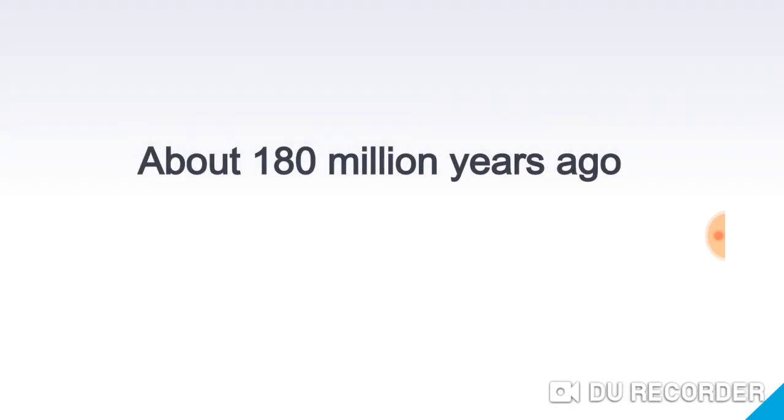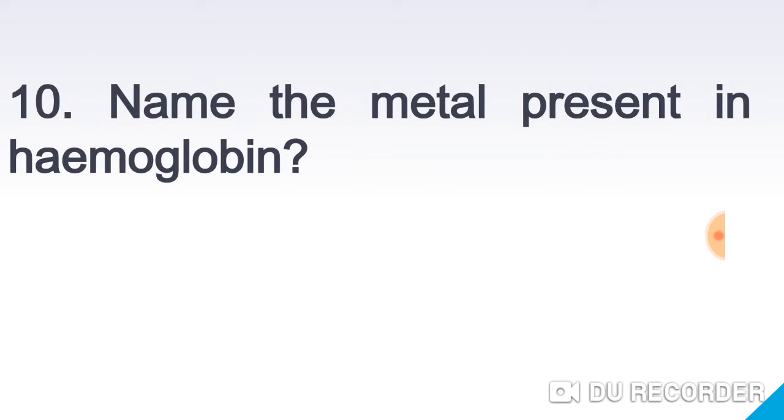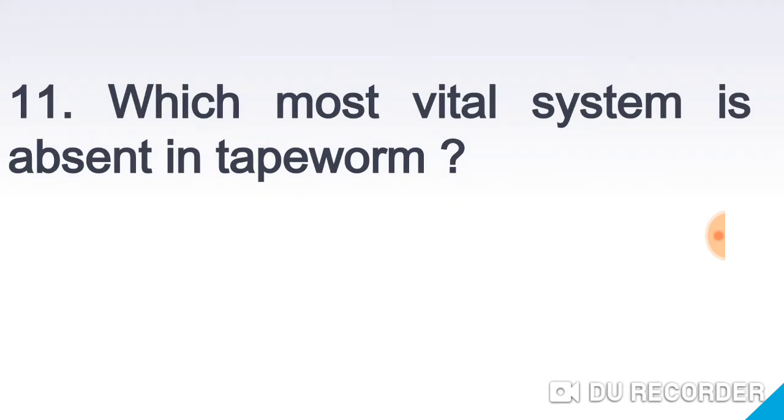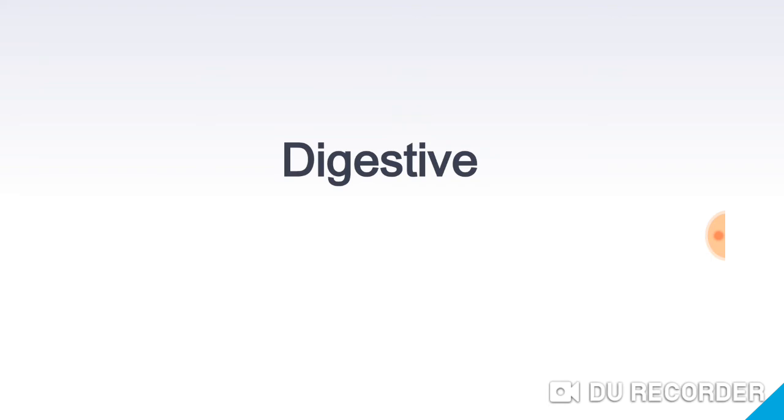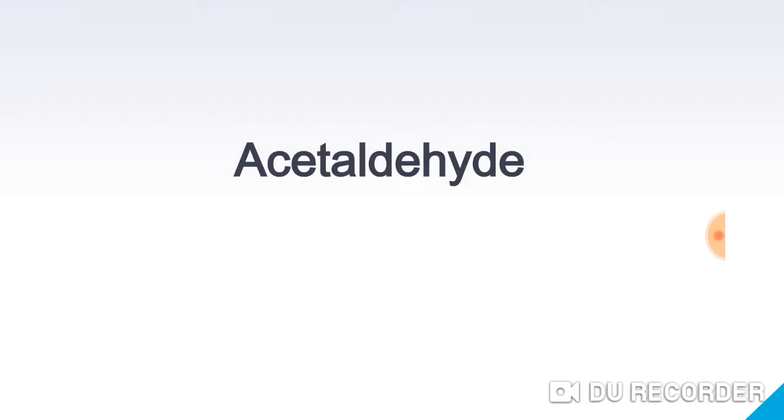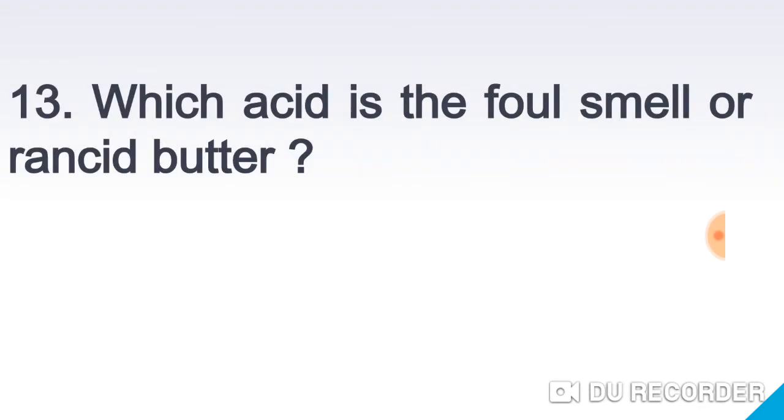Name the metal present in hemoglobin? Iron. Which most vital system is absent in tapeworm? Digestive system. Which organic compound is used for silvering mirrors? Acetaldehyde. Which acid is responsible for the foul smell of rancid butter? Butyric acid.